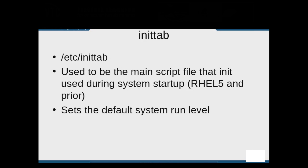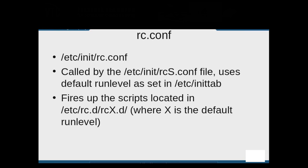The /etc/inittab file has been demoted with the introduction of Upstart. It used to set up main system features such as our terminals and whether Ctrl-Alt-Delete would restart the system. All of this functionality has been moved to other script files within the /etc/init directory. The only thing the inittab file does now is dictate what the system's default run level is supposed to be. The /etc/init/rc.conf file gets called by rcs.conf and uses the default run level picked up from the inittab file.